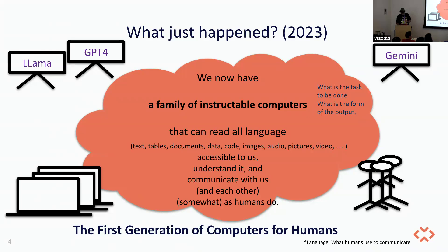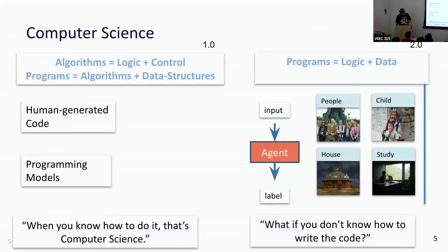From my background in programming languages, constraint programming, and high-performance computing, this is a big enough divide to call it a CS 2.0 regime. In the 1.0 regime, it was about figuring out how to represent a situation in the real world in a computer and how to write the code to solve a problem. You had to have an algorithm, a representation, write the code, get it done. But now it's different — primarily because what do you do when you don't actually know how to write the code?